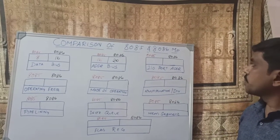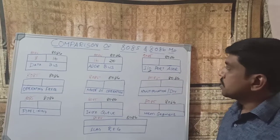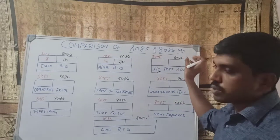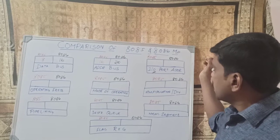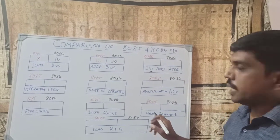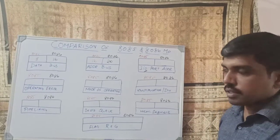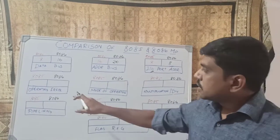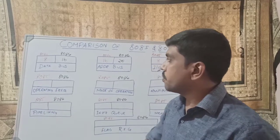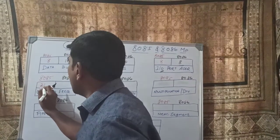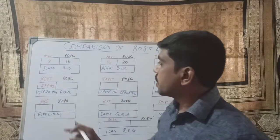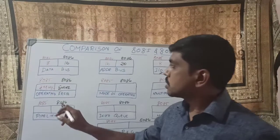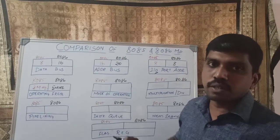The third property is IO port address. IO represents input and output — suppose you want to send data from the processor to outside, or receive data from outside into the microprocessor. Both the 8085 and 8086 microprocessors contain 8-bit port addresses. The fourth property is operating frequency: 8085 operates at 3 MHz, and 8086 operates at 5 MHz. Both microprocessors generate clock frequency with the help of a crystal oscillator.